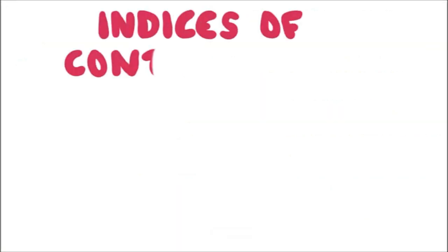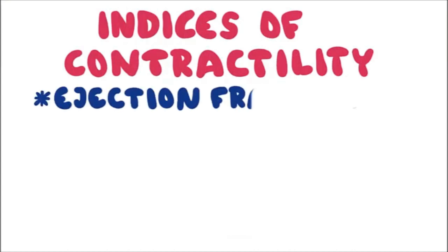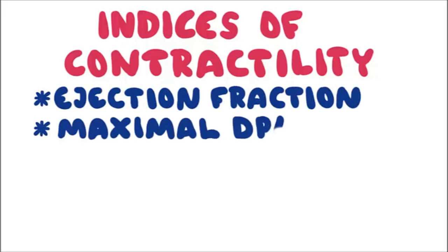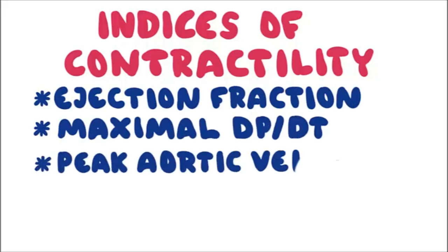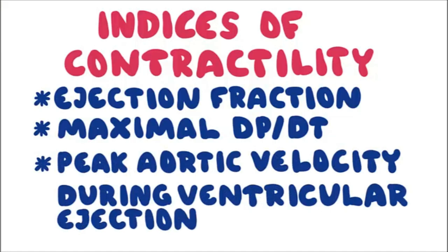Let's talk about the indices of contractility. There are three common indices: ejection fraction, maximal dp/dt during isovolumetric contraction, and peak aortic velocity during ventricular ejection.